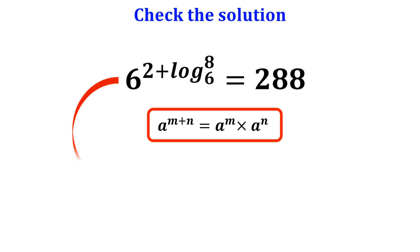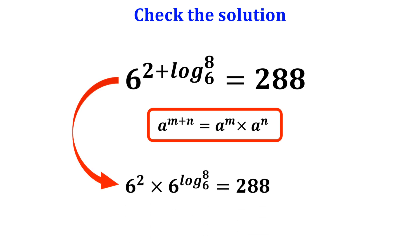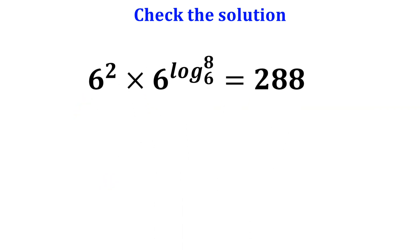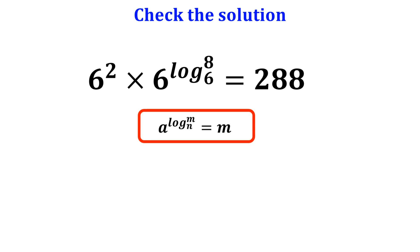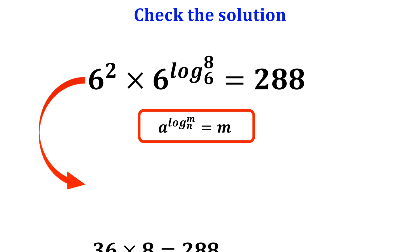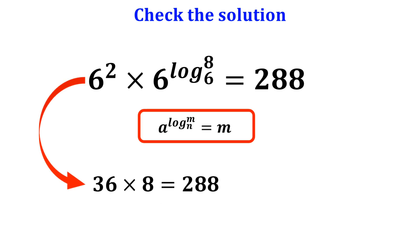So this simplifies to 6 to the power of 2 times 6 to the power of log of 8 with base 6, which equals 288. Again, according to the rules of exponents, a to the power of log of m with base a equals m. So this becomes 36 times 8, which equals 288. And that confirms 288 equals 288 — the solution is verified.